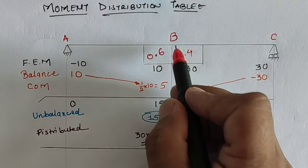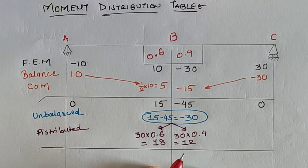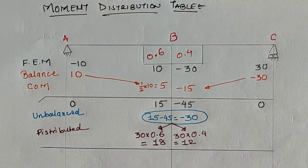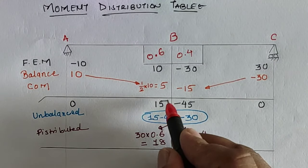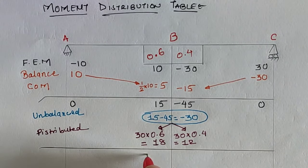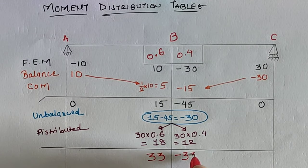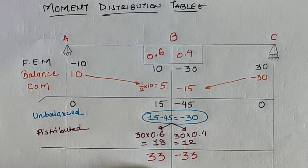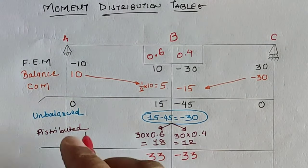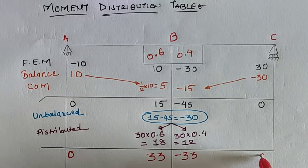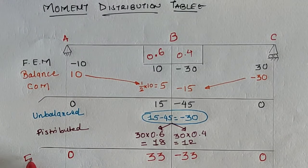Since only one intermediate joint needs to be distributed, only one step is required. We now take the algebraic summation for each column: for BA, 15 plus 18 equals 33 kilonewton meter; for BC, minus 45 plus 12 equals minus 33 kilonewton meter. The sum at joint B is 33 minus 33 equals zero, which verifies the balance. The final moments are: M_AB equals 0, M_BA equals 33, M_BC equals minus 33, M_CB equals 0.